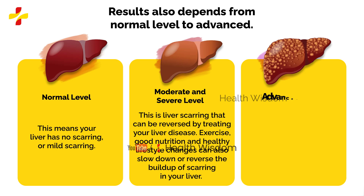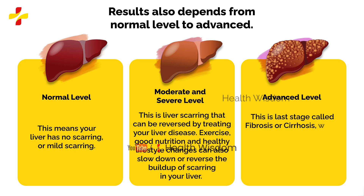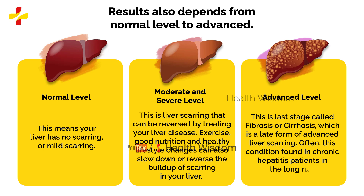Advanced level: this is the last stage called fibrosis or cirrhosis, which is a late form of advanced liver scarring. Often, this condition is found in chronic hepatitis patients in the long run.